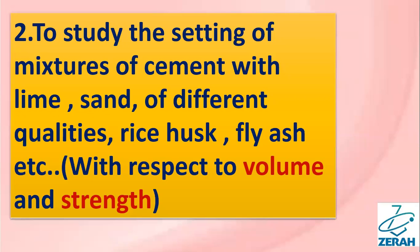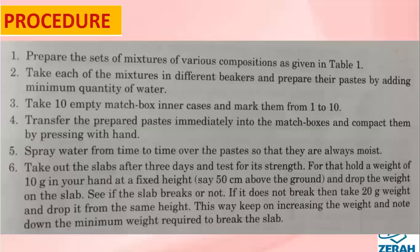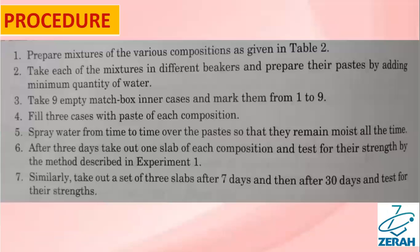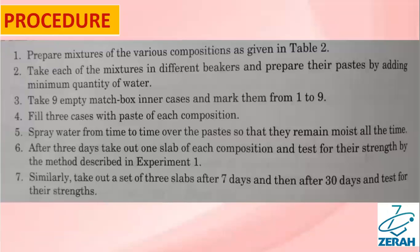The second project is to study the setting of mixtures of cement with lime, sand, different quantities and qualities, rice husk, fly ash, etc. This is calculated with respect to volume and strength. The requirements are given. The procedure is also given here. Then the same study is carried out with respect to time and strength. The procedure and calculation table are also given here.